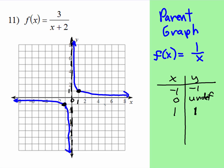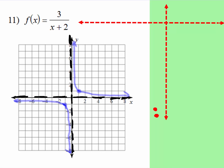Now, what happens when it doesn't look like 1 over x? Remember what we've said about parent graphs: when there's something inside with the x — whether it's parentheses, absolute value, any kind of radical symbol — that tells you that you're going to move left or right, and it's always going to be the opposite. So what's the opposite of positive 2? Negative 2. So you have to take this whole graph and shift it.